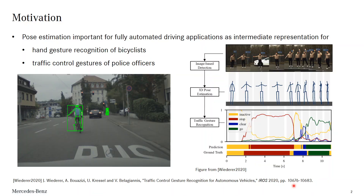We present a new method for human pose estimation, which is an important task for fully automated driving applications. It may be used as an intermediate representation for different perception tasks, like hand gesture recognition of bicyclists, shown here on the left. This recognition helps predict lane switches of bicyclists. There is also recent work by Widerob, presented last year, where pose estimation is used for recognition of traffic control gestures of police officers.